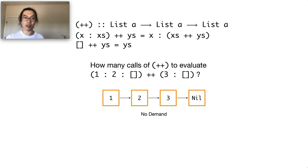And in the case the entire list is not used at all, so there is no demand, the answer is C, 0 call.